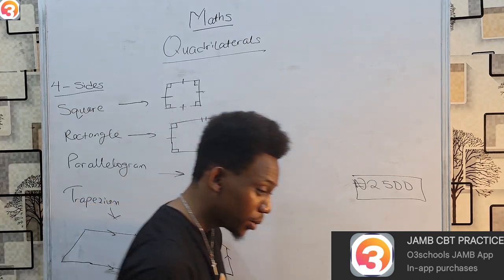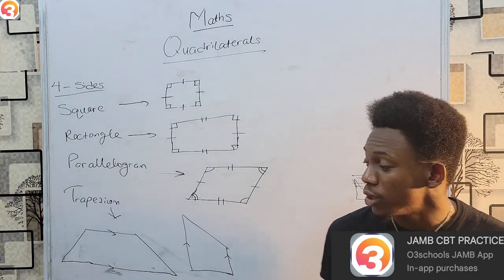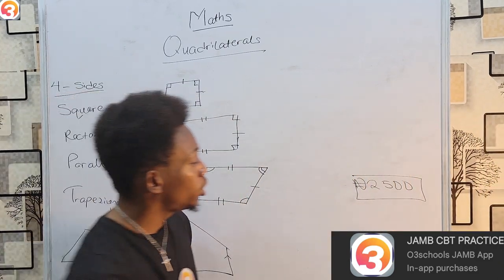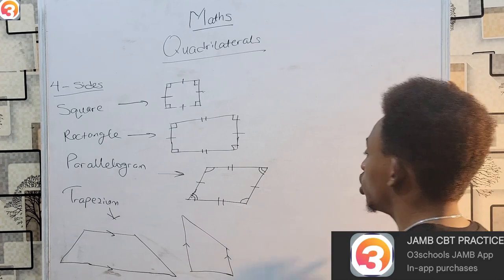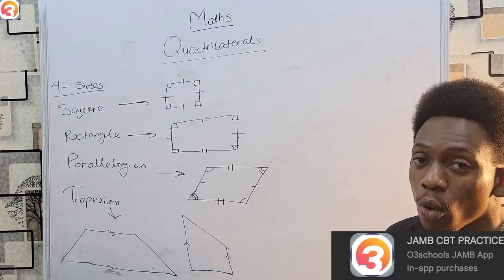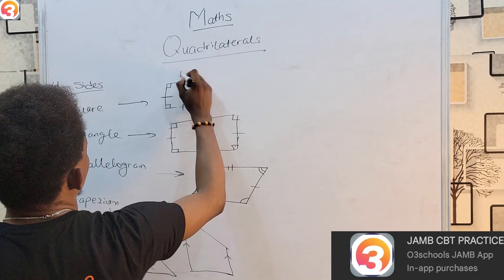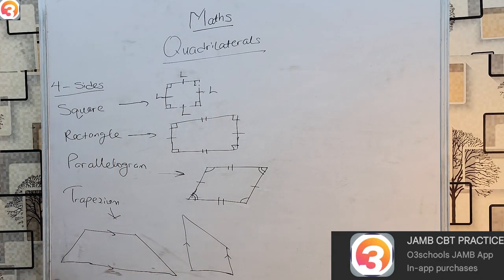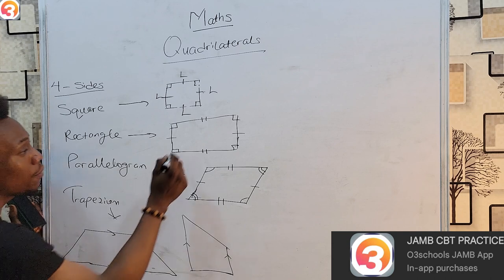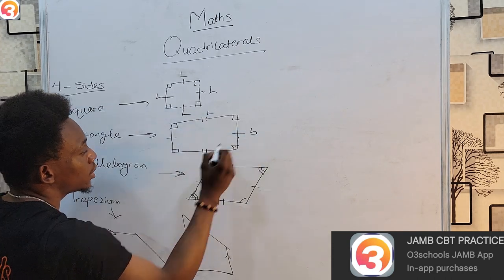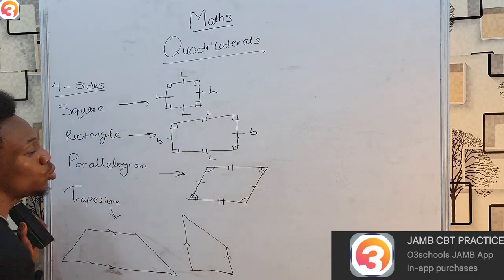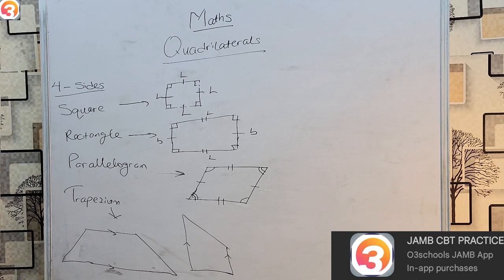In all these shapes they also have perimeters and areas. Perimeter doesn't need a special formula — perimeter is simply the sum of all the sides. So for a square, if each side is L, the perimeter is basically 4L. For a rectangle, if you call the sides length and breadth, the perimeter is two lengths plus two breadths. You don't really need any special formula for perimeters.